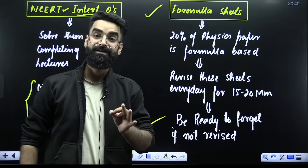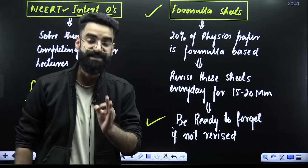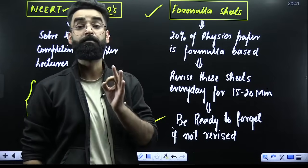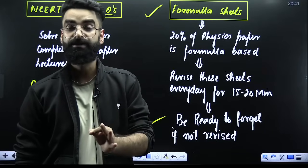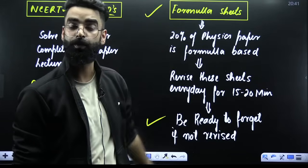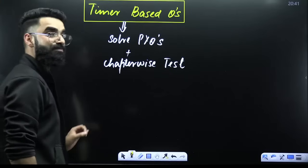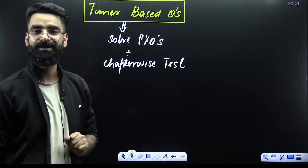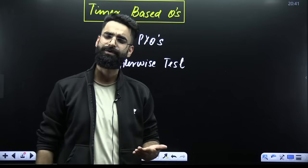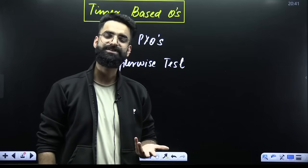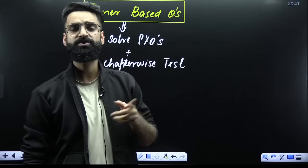My suggestion: make formula sheets for every single chapter and revise them for a minimum of 15 to 20 minutes every single day. That's how you are going to remember the formulas and handle this 20% of questions in your NEET Physics examination. The last and most important thing students miss: in your actual NEET examination, you have exactly one minute to solve one question.